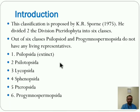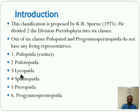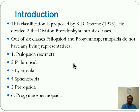Out of these six classes, Psilopsida and Progymnospermopsida do not have any living representatives. Let us see which they are: first one is Psilopsida — it is extinct. Second is Psilotopsida, Lycopsida, Sphenopsida, Pteropsida, and Progymnospermopsida. In this way, these are the six different classes.